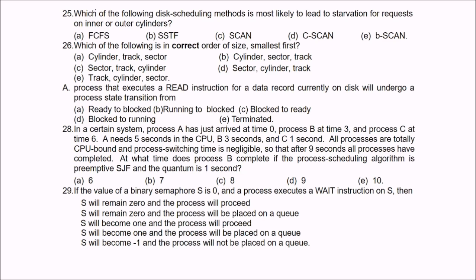Question 25: Which disk scheduling method is most likely to lead to starvation for requests on inner and outer cylinders? The answer is B — Shortest Seek Time First (SSTF), because the SSTF disk scheduling method is most likely to lead to starvation for requests on inner and outer cylinders.